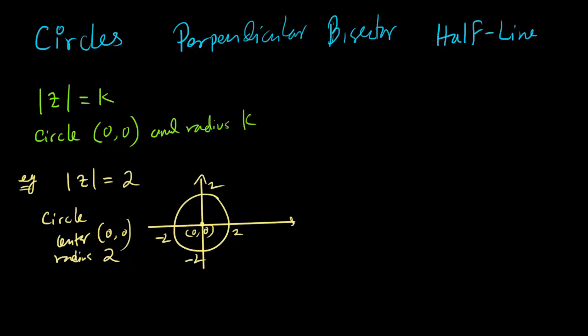Now there is a version of z minus another complex number, let me call it a plus bi, modulus equals to some k. In that case, the circle is going to have the center (a,b) and radius k.